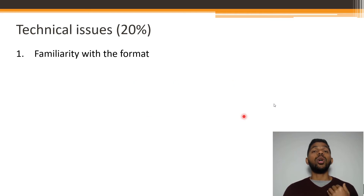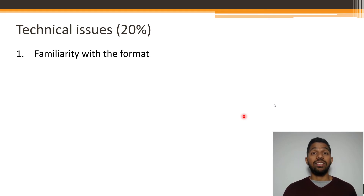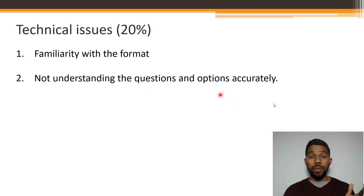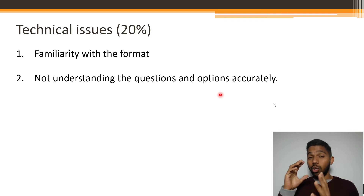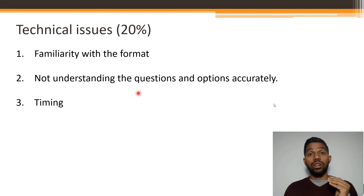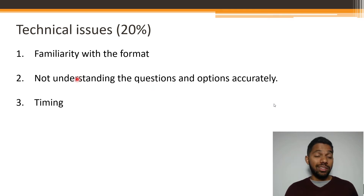With technical issues, it's mostly people who are taking the exam for the first time and are not familiar with the format or the different types of questions that can be asked. It can also be someone not understanding the questions and options accurately. If you've listened to a passage and then misread the question or the options, that can cause you to get the answer incorrectly. Be extra careful when reading the question and the options.